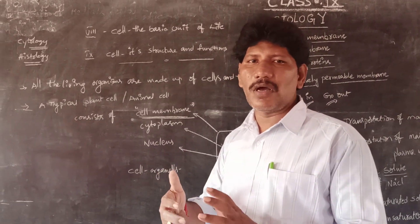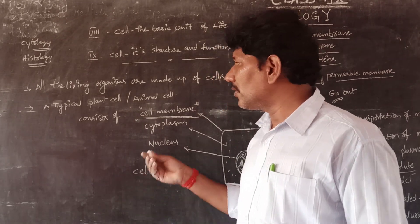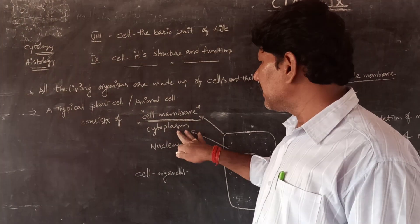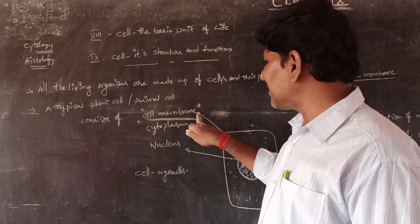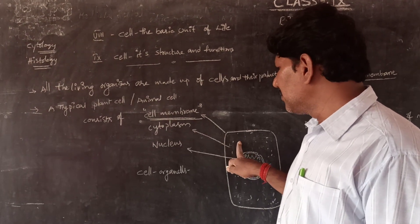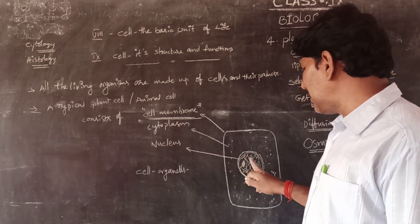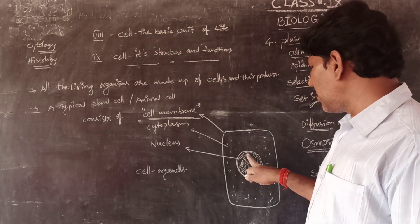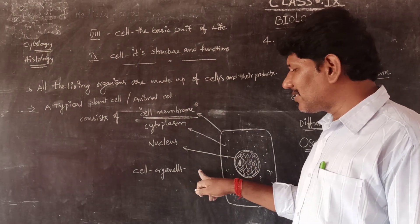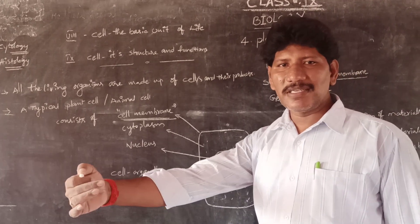Now let us take a typical plant cell or animal cell. It usually consists of mainly three layers: the cell membrane as the outermost layer, the cytoplasm which is the fluid portion in which all the cell organelles float, and the nucleus — the boss of the cell — which controls and coordinates all the cell activities. We have already completed the structures and specific functions of all cell organelles in the previous lessons.